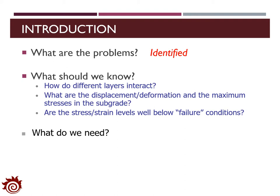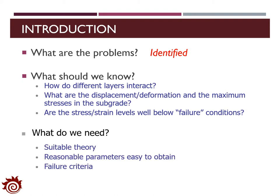This leads to the third question: what do we need to know to solve the second set of questions? First, we want a straightforward series to identify values, including the estimation of stress and strain under flexible pavements and relationships for different layers. Second, we want to define reasonable parameters that can be easily obtained from lab and field experiments. Finally, we need to identify the failure criterions for flexible pavements, which will define the upper bounds of the variables and parameters.